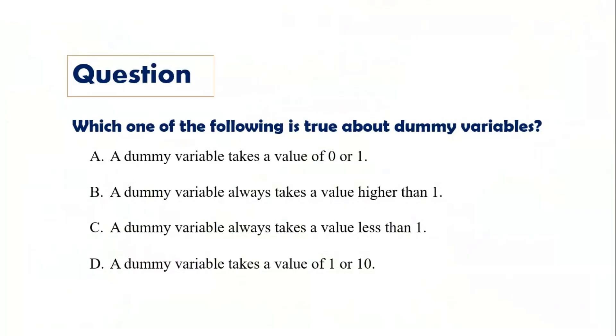Let me read the question again. Which one of the following is true about dummy variables? The options are: zero or one, higher than one, less than one, or one or ten. The dummy variable is typically defined as follows.